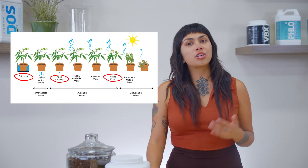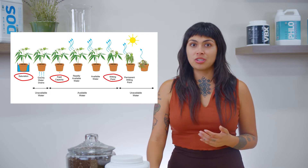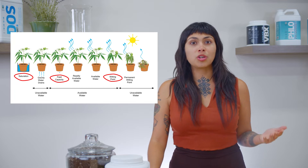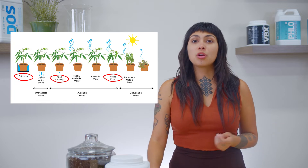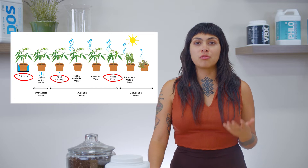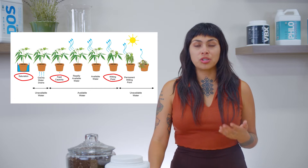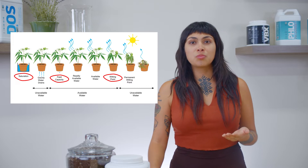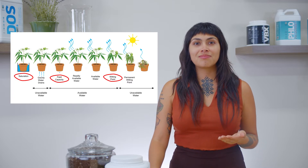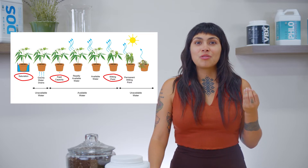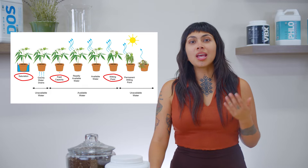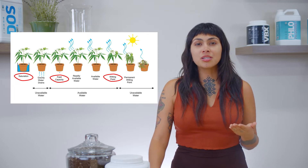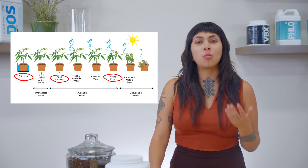Saturation occurs when the duration of irrigation events continues beyond a substrate's water holding capacity. Prolonged and frequent periods of full saturation will devoid the rhizosphere of available oxygen and put excess pressure on the roots. Field capacity is the point at which runoff has ceased and we've reached the substrate's maximum available water level.